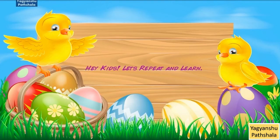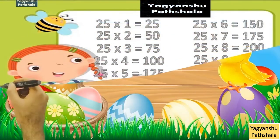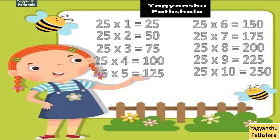Hey kids, let's repeat and learn. 25 1 Jaa 25. 25 2 Jaa 50. 25 3 Jaa 75. 25 4 Jaa 100. 25 5 Jaa 125. 25 6 Jaa 150. 25 7 Jaa 175. 25 8 Jaa 200. 25 9 Jaa 225. 25 10 Jaa 250.